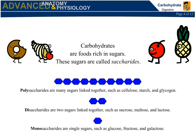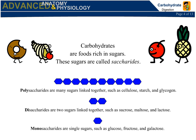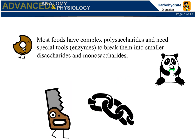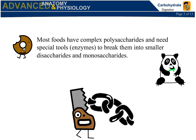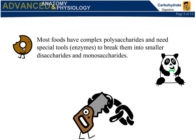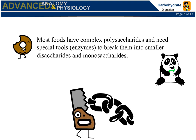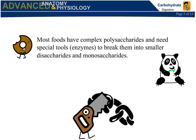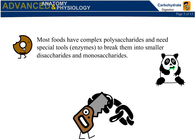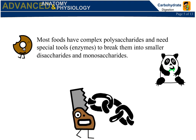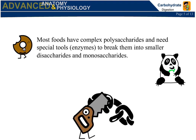Monosaccharides are single sugars, such as glucose, fructose, and galactose. Most foods have complex polysaccharides and need special tools — enzymes — to break them into smaller disaccharides and monosaccharides.